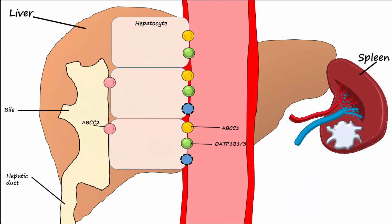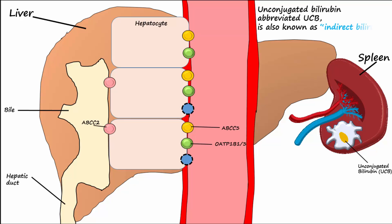The actions of biliverdin reductase produce unconjugated bilirubin, abbreviated UCB, also known as indirect bilirubin. UCB enters the blood, and since it is quite lipophilic, it must be bound to albumin, since blood is an aqueous and hydrophilic solution. Bound to albumin, the UCB travels to the liver for further processing.